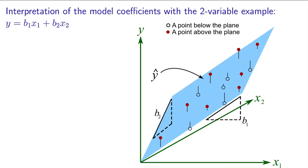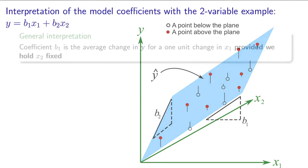When we want to interpret these b1 and b2 values, these slope coefficients, we have to be a little more specific than in the case where we were dealing with just a single input variable.